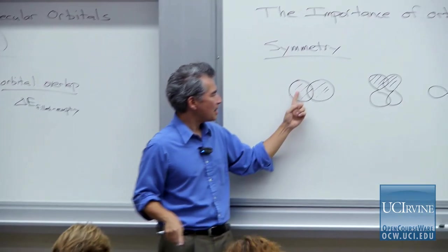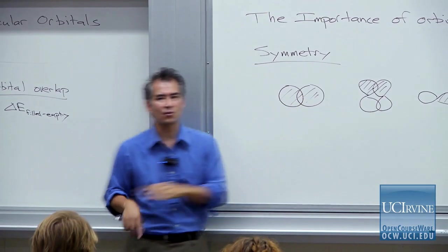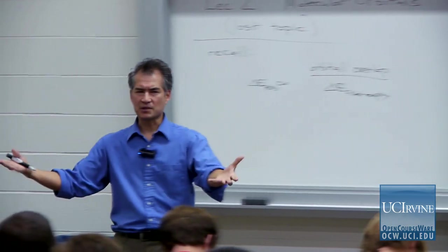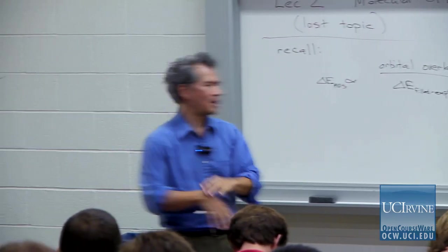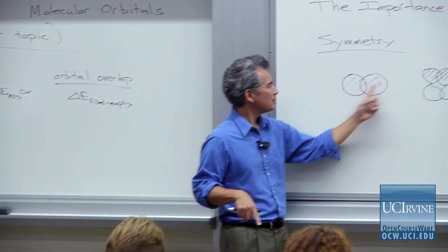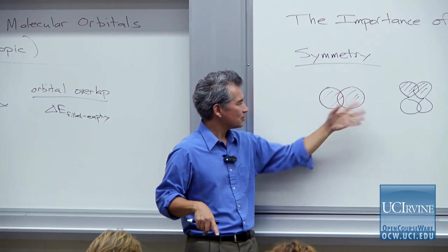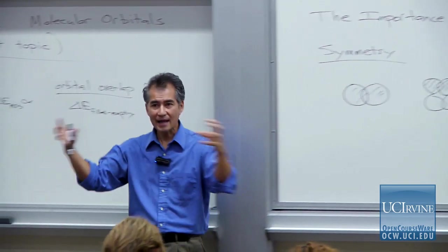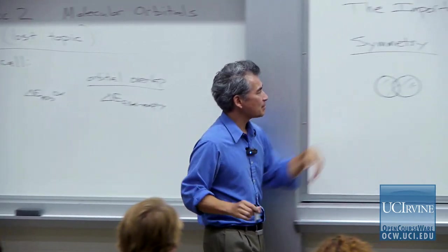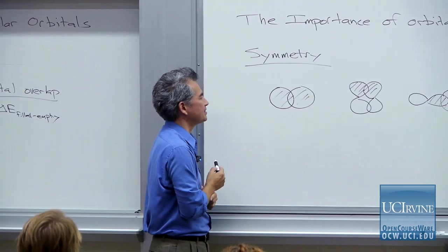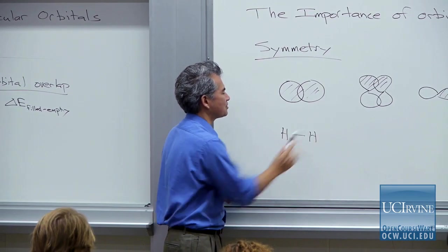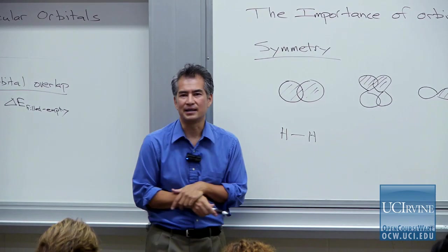Let's imagine an example where we have two s orbitals interacting with each other — for example, to make a hydrogen molecule, two H's. As long as I have two 1s orbitals interacting with each other, I can imagine some combination where I have like phases, and that's the kind of interaction that leads to a hydrogen-hydrogen bond.